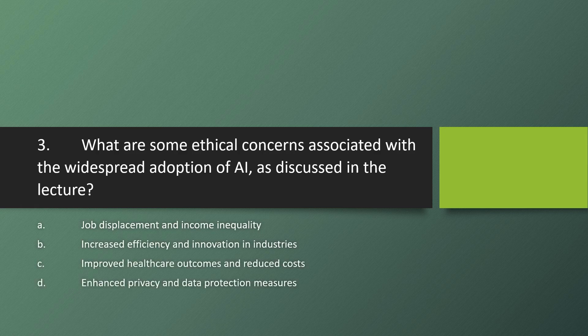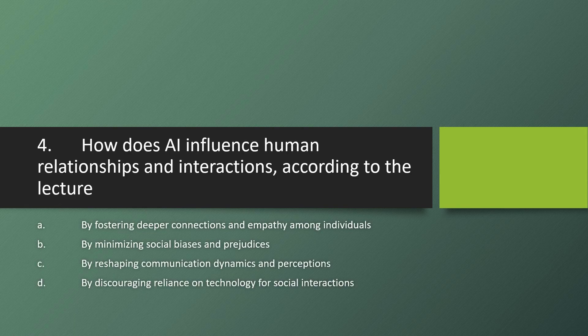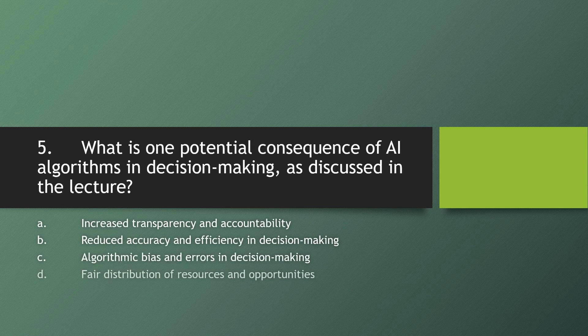Question 3: What are some ethical concerns associated with the widespread adoption of AI, as discussed in the lecture? Question 4: How does AI influence human relationships and interactions, according to the lecture? Question 5: What is one potential consequence of AI algorithms in decision-making, as discussed in the lecture?